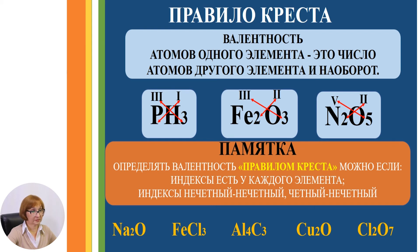Давайте проверим. N2O1: валентность 1, 2. FeCl3: 3, 1. Al4C3: 3, 4. Cu2O: валентность 1, 2. И последняя формула: Cl2O7 — валентность 7, 2.